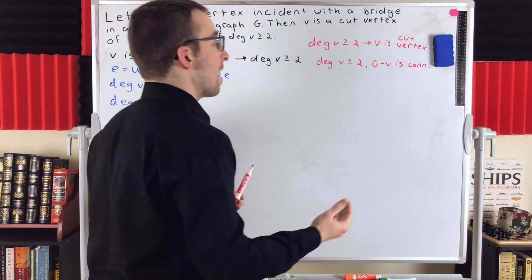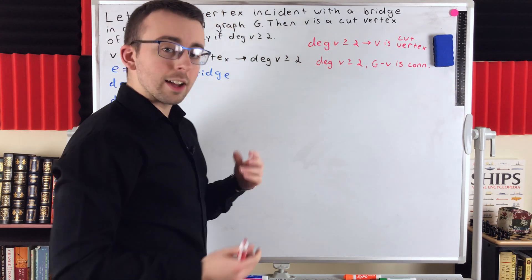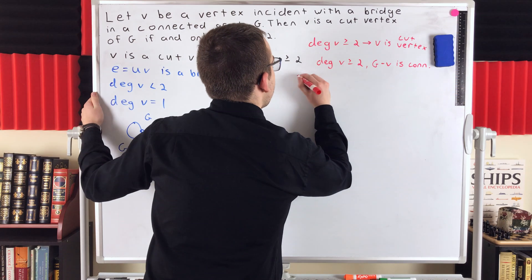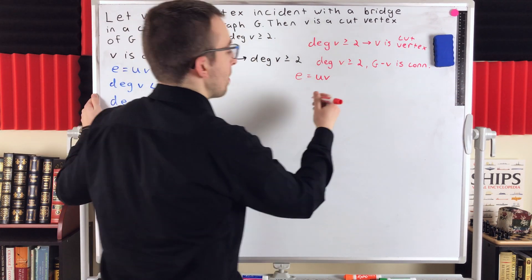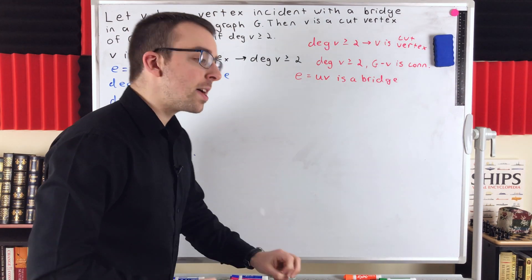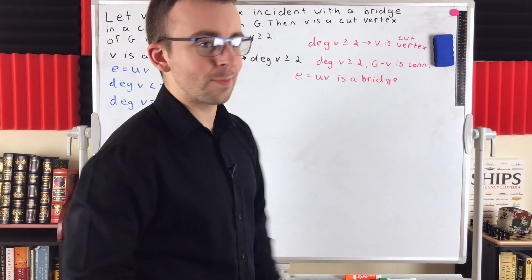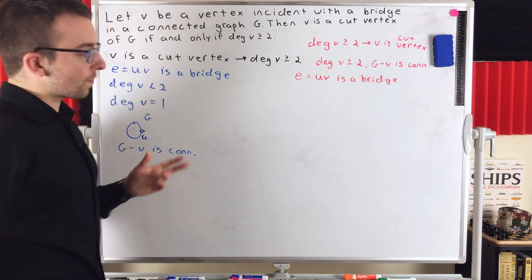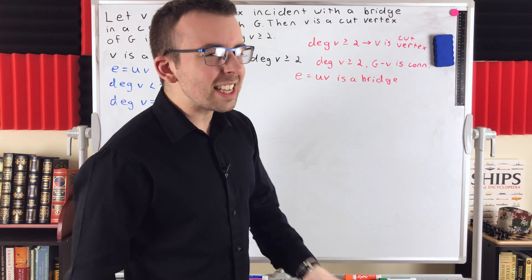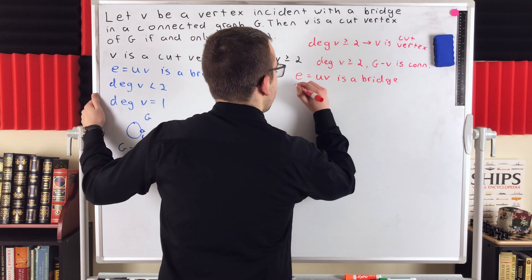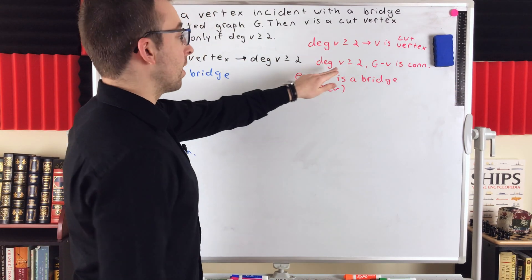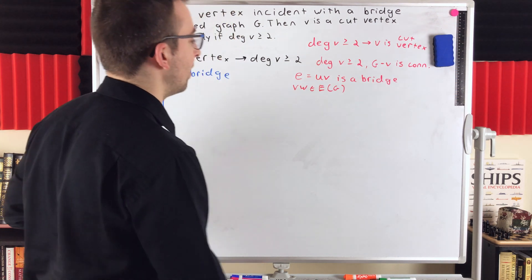Once we show this assumption leads to a contradiction, that means G minus V is in fact disconnected, so V is a cut vertex. We keep our edge E = UV as a bridge. Since the degree of V is greater than or equal to 2, V must be adjacent to at least one other vertex besides U. Let's call that vertex W, so VW is an element of the edge set of G.